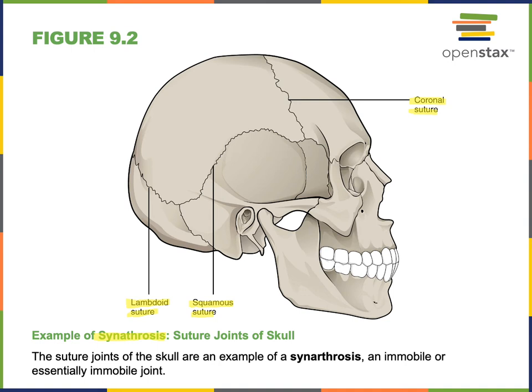All joints of the skull, with the exception of the temporomandibular joint, are immobile joints and therefore are all synarthroses. The sutures of the skull are fibrous joints, so a fibrous synarthrosis is a subtype that adds a structural classification on top of the functional one. An immobile joint where dense fibrous connective tissue holds two bones together is called a suture.